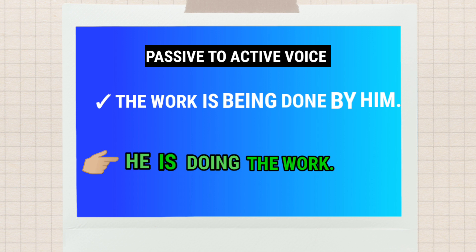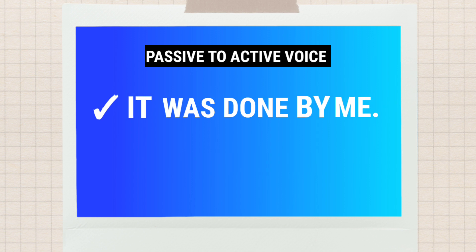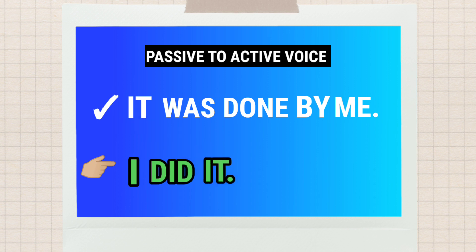Let me show you again with another example. If you get anything like this in your examination, it will be quite helpful. Another example: 'It was done by me' — passive voice. To change it to active, bring 'I' first, then 'did' because you use the past form of the main verb 'do' — do, did — then 'it'. So the active voice is: 'I did it.' The passive was 'It was done by me', but in active voice you write 'I did it.'